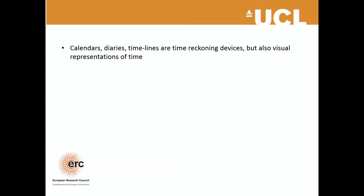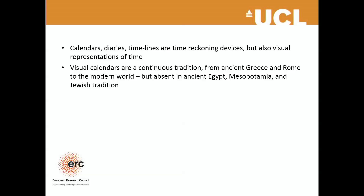To conclude: we have seen that calendars, diaries, and timelines are time-reckoning devices, but they are also visual representations of time, and therefore a certain conceptualization of what time is. We have also seen that visual calendars are a continuous tradition running from ancient Rome — it's really in Rome that these calendars develop and become an important part of culture — through the Middle Ages, all the way to the modern period. And yet this culture is more or less entirely absent in ancient Egypt, in Mesopotamia, and in Jewish tradition.